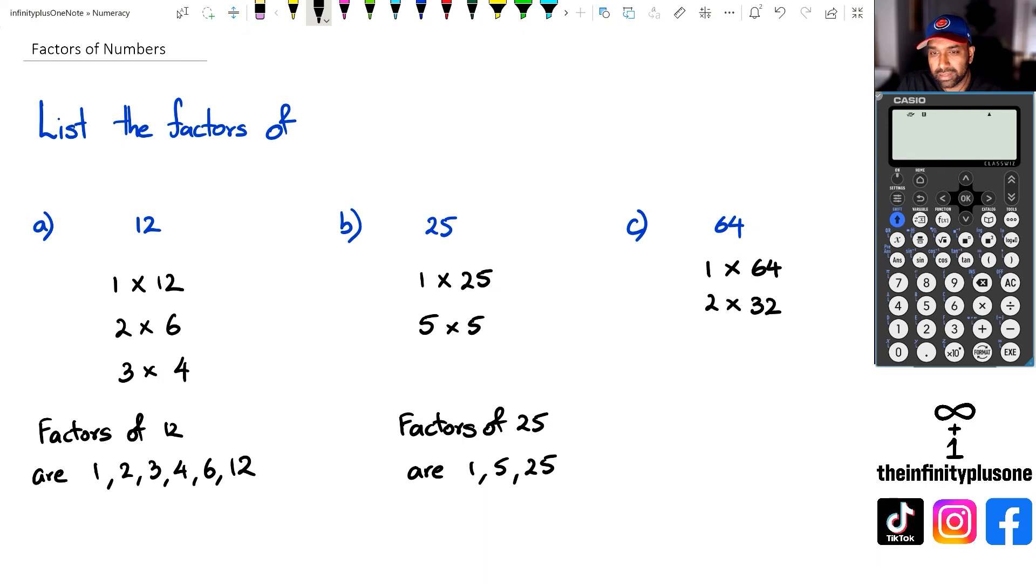Then I'm thinking, well, can 64 be divided by 3? I don't think it can, so I'm not going to go 3. And then you've got 64 divided by 4. So that's going to be 4 times 16.